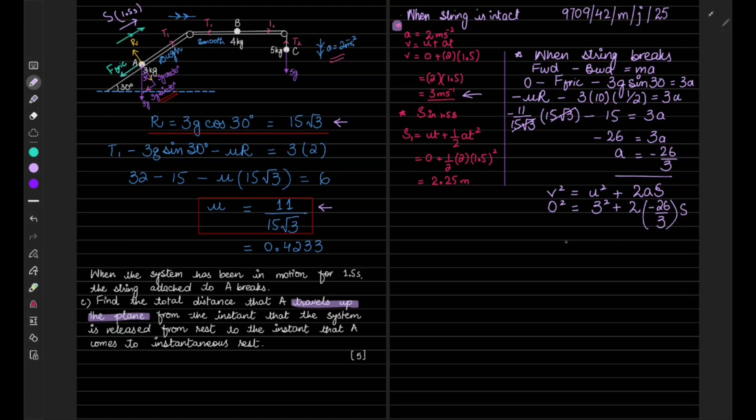So it will become 52 over 3 times s equals 9. And then s equals 27 over 52, that is 0.5192.